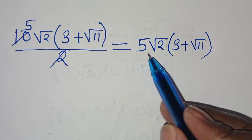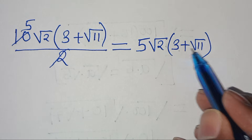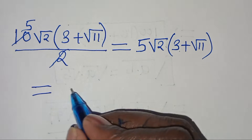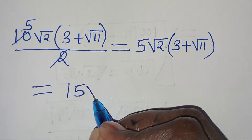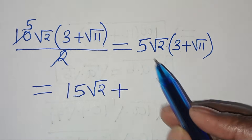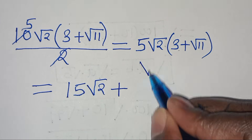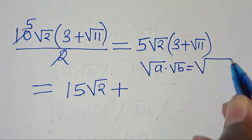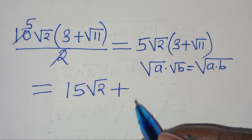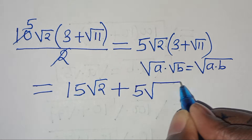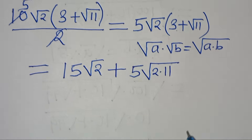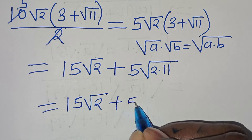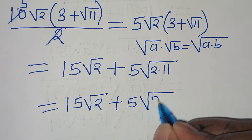We now have 5 times square root of 2 times (3 plus square root of 11). Expanding: 5 times square root of 2 times 3 is 15 square root of 2, plus 5 times square root of 2 times square root of 11. Using the property that square root of a times square root of b equals square root of ab, this gives 5 times square root of 22. So the final answer is 15 square root of 2 plus 5 square root of 22.